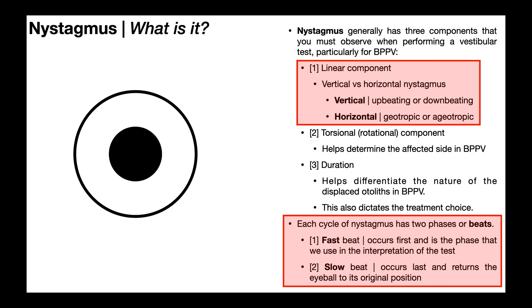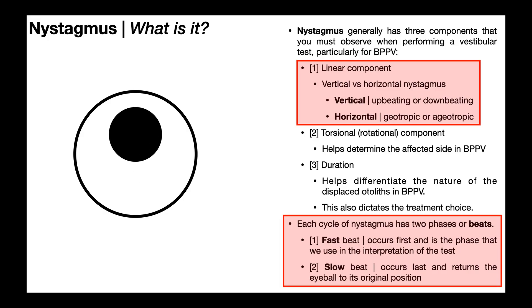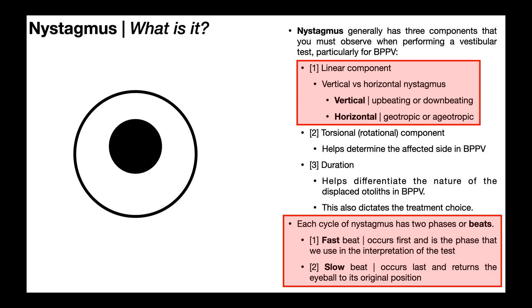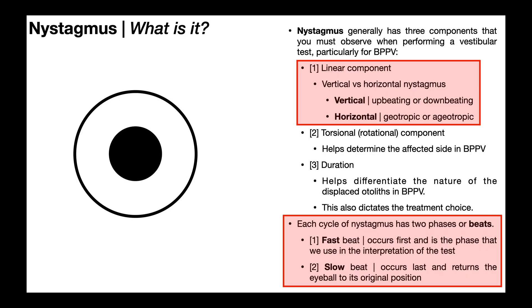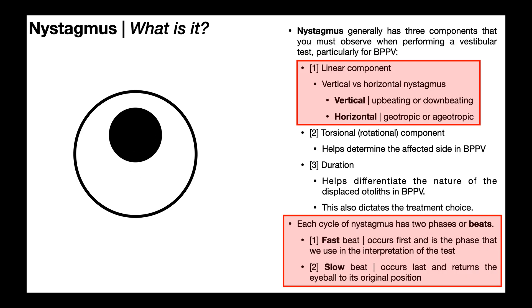Horizontal nystagmus comes in two types: either geotropic or ageotropic. Don't worry about that right now — we'll be covering that at the end of this video. For now, let's consider vertical nystagmus.